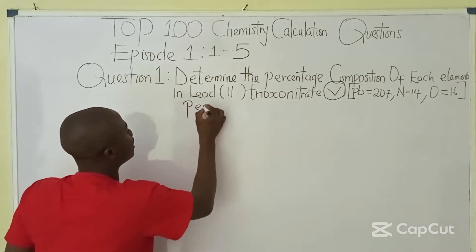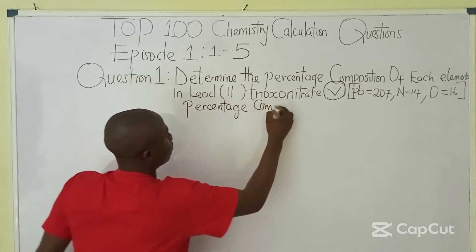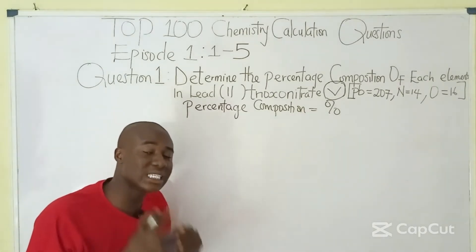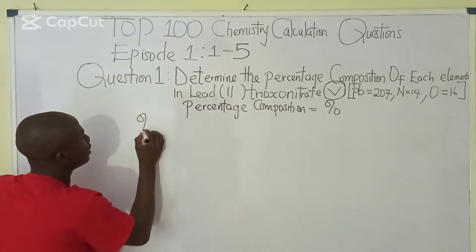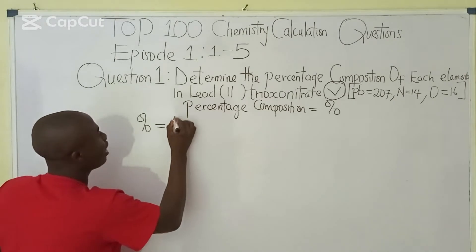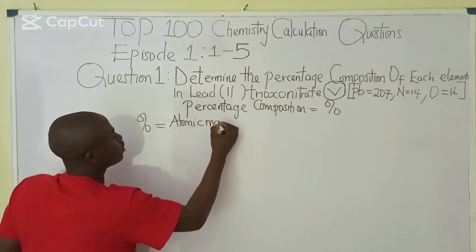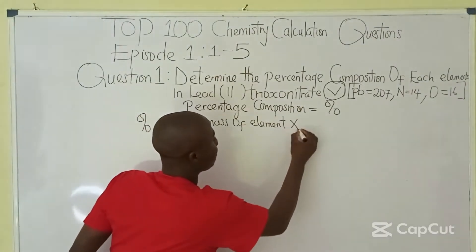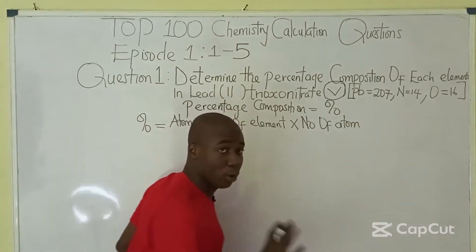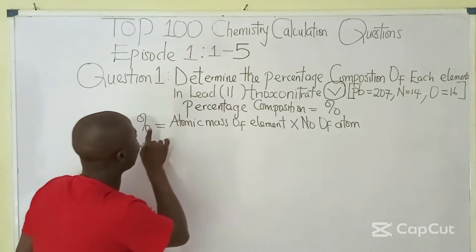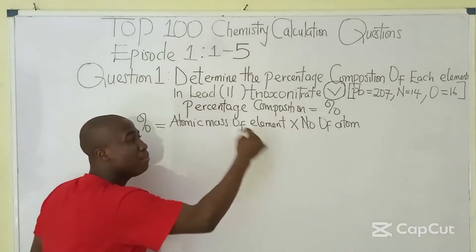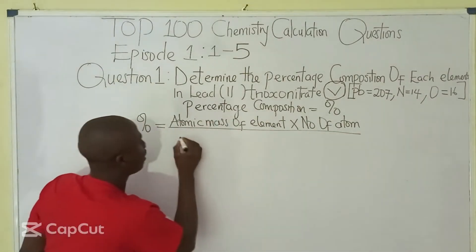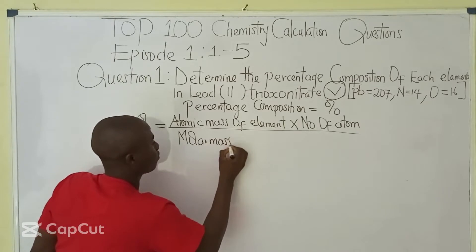Percentage composition is given with this symbol. To solve questions on percentage composition, there is a formula that we must apply. It is: percentage composition equals atomic mass of the element in the compound times the number of atoms of that particular element, over the molar mass of the compound.